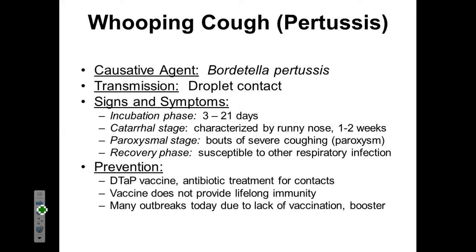To prevent whooping cough, we can take the Tdap vaccine. This is a very easily prevented illness. Unfortunately, as vaccination rates have been dropping in our country, we've started to see outbreaks of whooping cough — a formerly unheard-of disease 15 years ago. If somebody contracts whooping cough, it can be treated with antibiotics. This vaccine does not provide lifelong immunity and oftentimes a booster shot is needed. Thanks to the anti-vaccination movement, this formerly prevented disease is making a comeback.